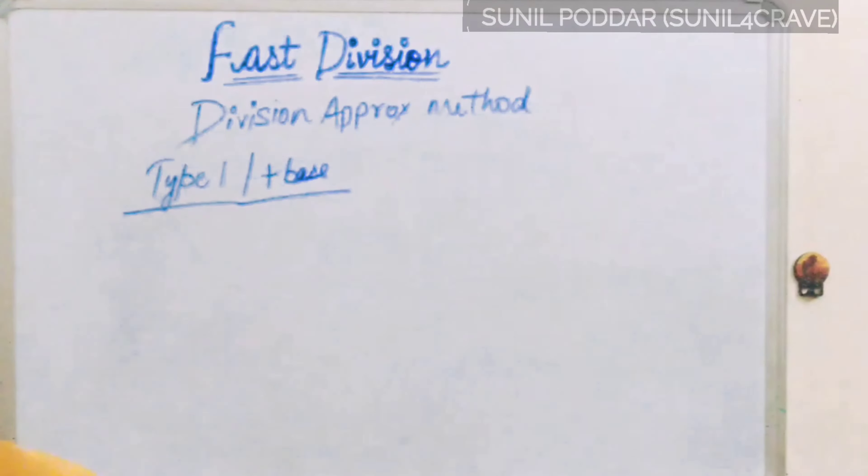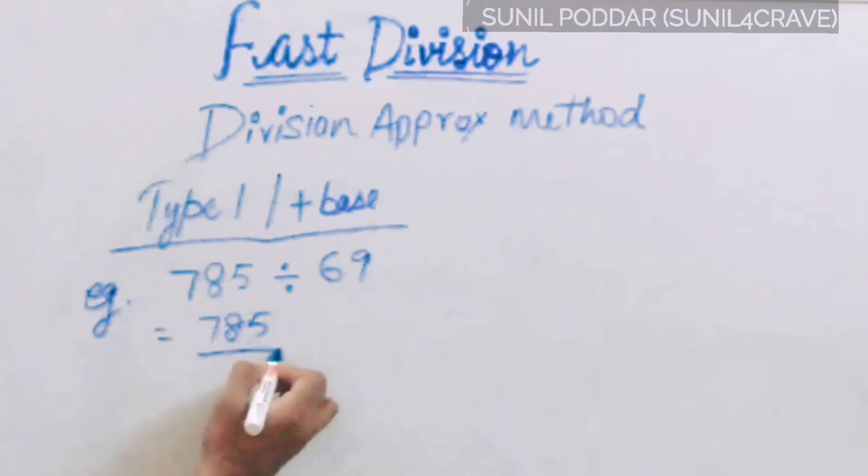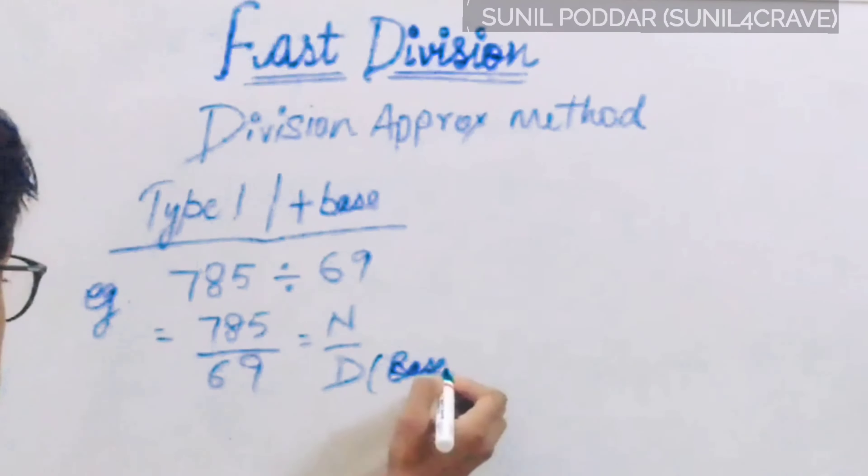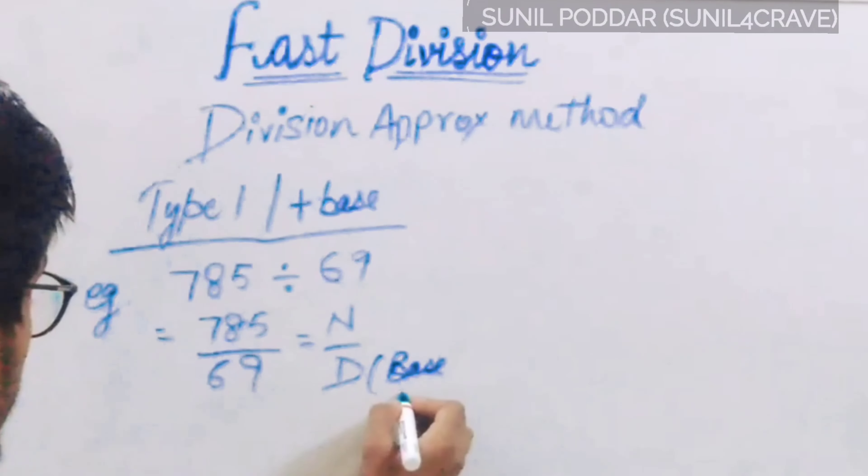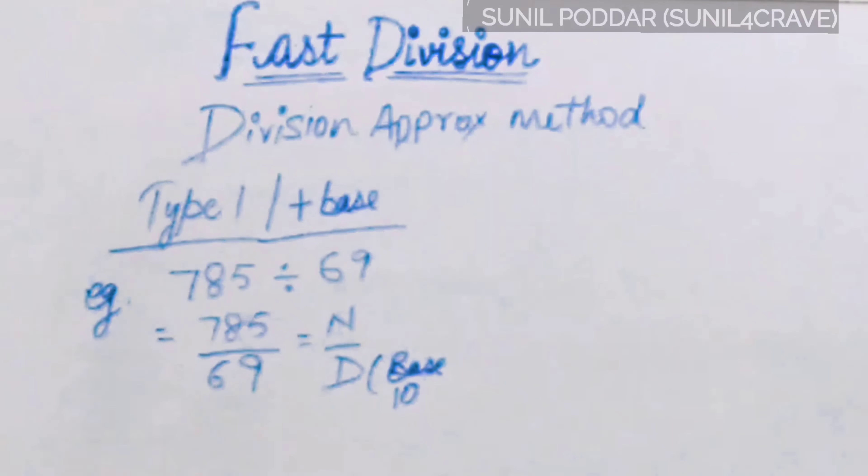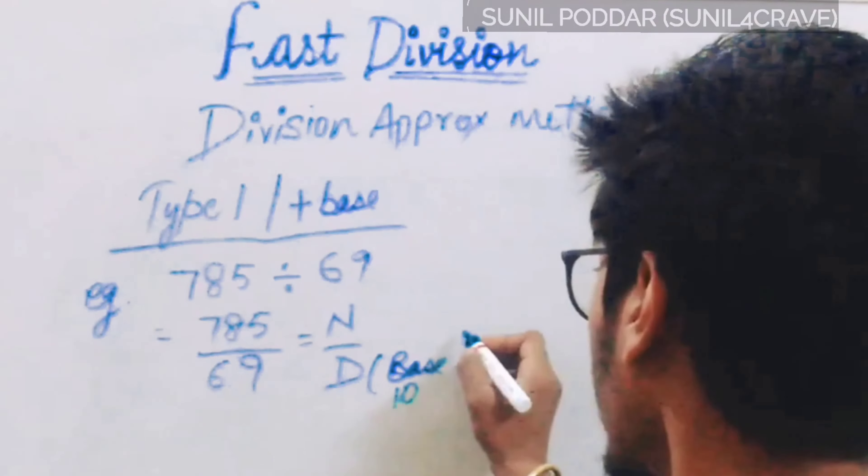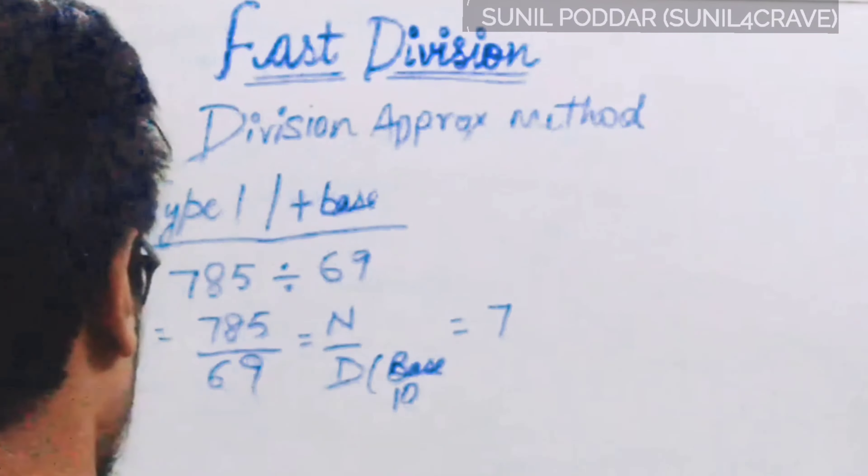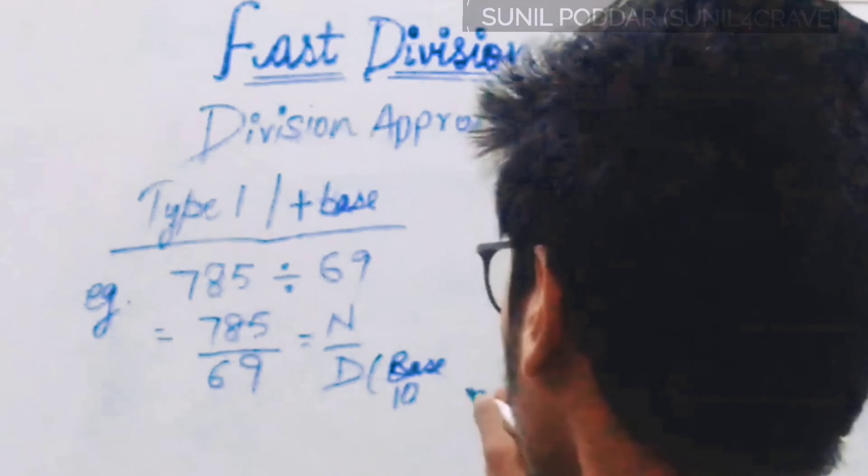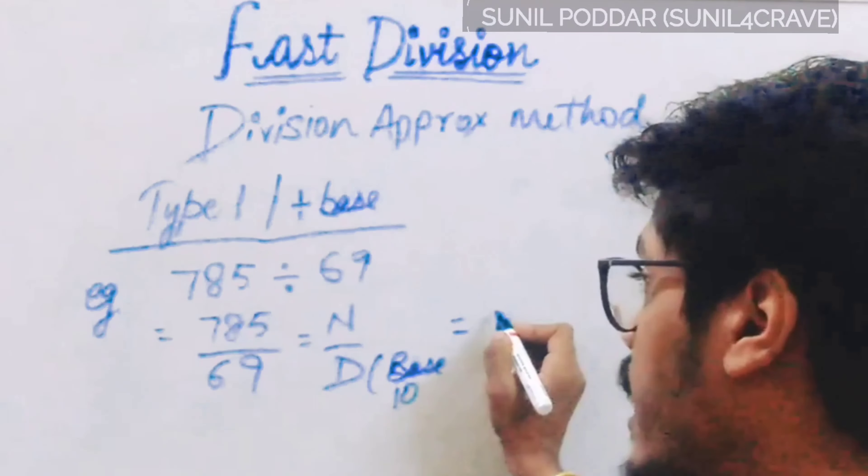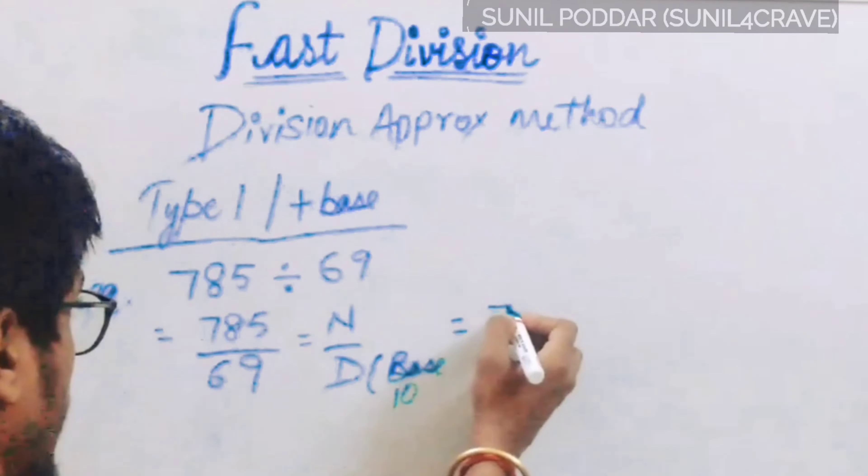I am going to discuss three types with you here. The first one is Type 1, or we also call it positive plus base. Let's take an example here. We have to divide 785 with 69. We also write it as 785 upon 69. 785 is nearby to 800, and 69 is nearby to 70. Write it here.